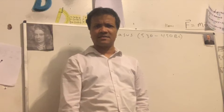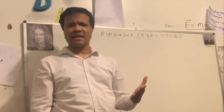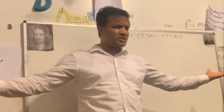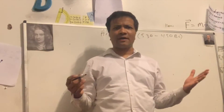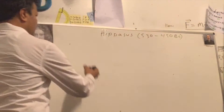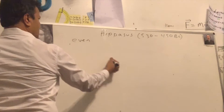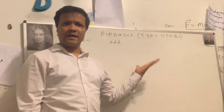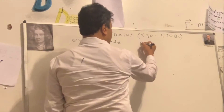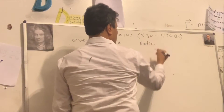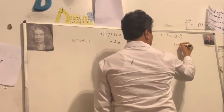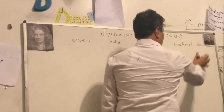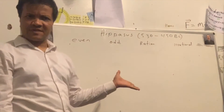Hippasus was killed because he invented irrational numbers — not rational numbers. Today I'm going to talk about a few things: even numbers, odd numbers, what makes a number even, what makes it odd, rational numbers, irrational numbers, and integers as well.